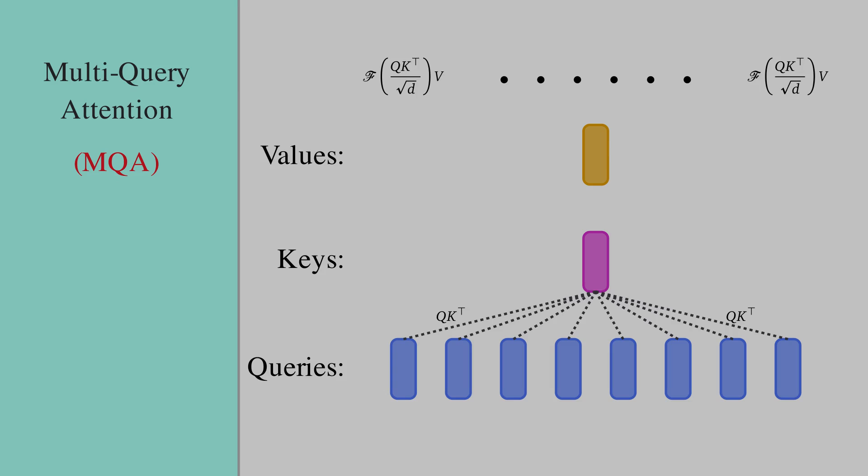Then each one of these Q K transpose products are scaled by 1 over square root of d. Next we compute the output head as the softmax of this scaled Q K transpose, multiplied by the single value matrix V. This results in h output heads, which we will concatenate together to get the original representation dimensionality d or d_model.